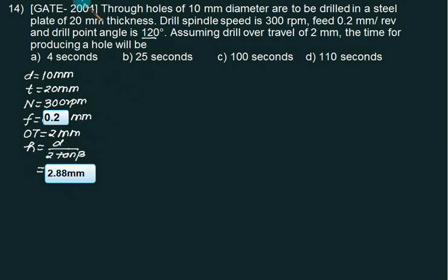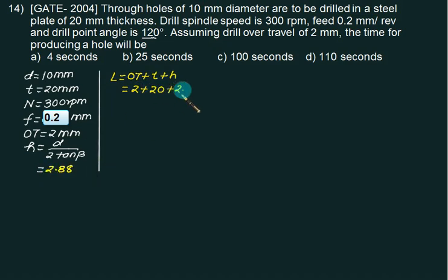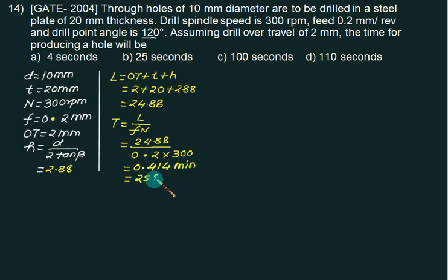This time approach is not given, so we calculate length as over travel plus T plus H. 2mm plus 20mm plus 2.88mm is 24.88mm. We will try this and match the answer. 24.88 divided by feed 0.2 times 300 RPM equals 0.41 minutes. Multiply by 60, that is very close to 25 seconds.